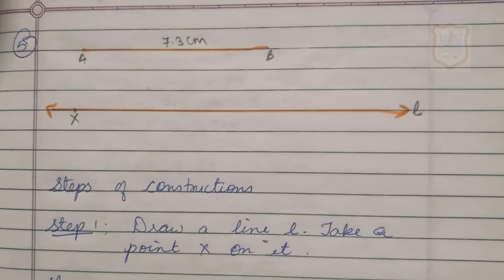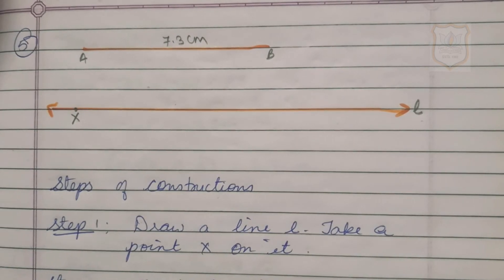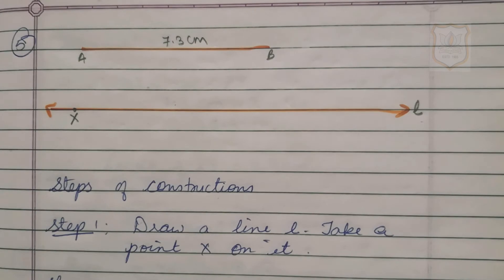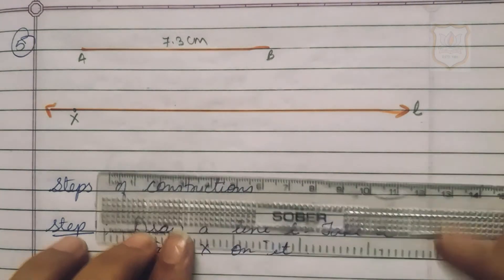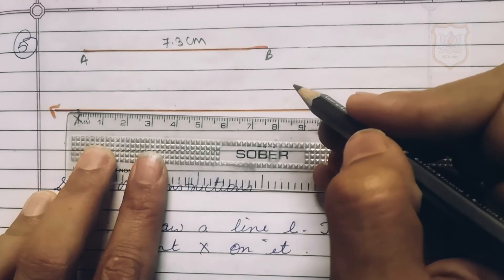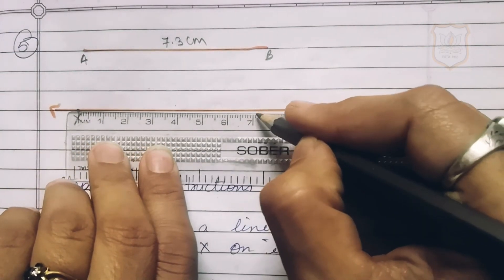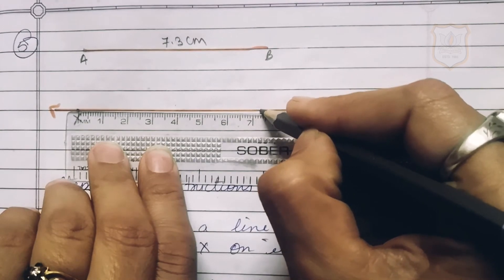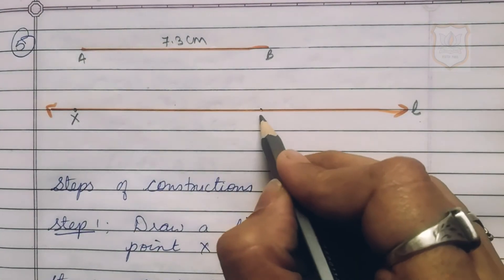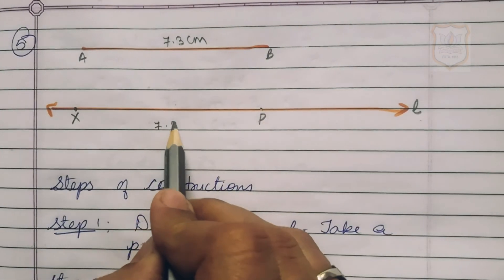Step 2: Construct line segment XP on the line L such that XP equals AB = 7.3 centimeter. Place the scale at 0 at point X, mark another point at 7.3 centimeter — counting 7.1, 7.2, 7.3 — and name it as point P. The measurement of XP is 7.3 centimeter, equal to line segment AB.